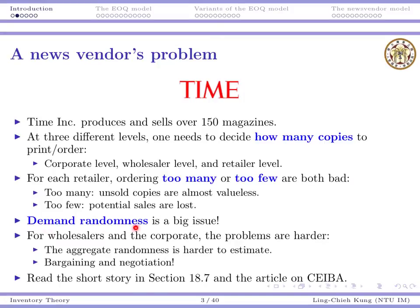In general, demand randomness is a big issue in this problem. If we really want to optimize the inventory decision, we need to estimate the demand. And for wholesalers and the corporate level, the problem can be harder because first we are dealing with aggregate randomness — each wholesaler has many different retailers, and each one may fluctuate in their order quantity.